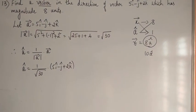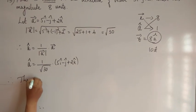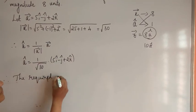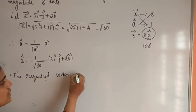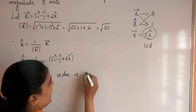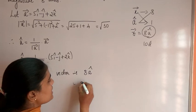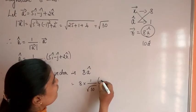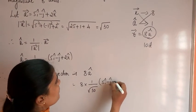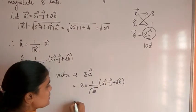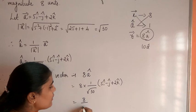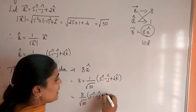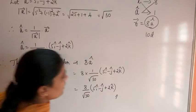Now find the required vector. Since the magnitude is 8 units, the required vector equals 8 into A-cap. A-cap equals 1 by root 30 into (5i-cap minus j-cap plus 2k-cap). Therefore the required vector is 8 by root 30, into (5i-cap minus j-cap plus 2k-cap). This is the required vector.